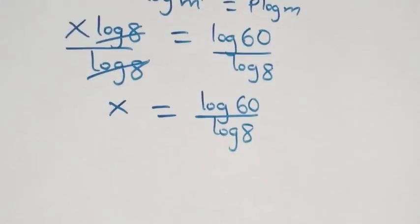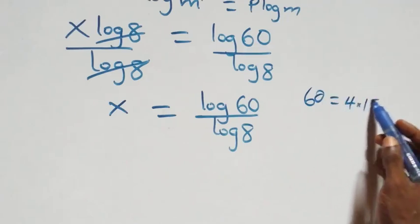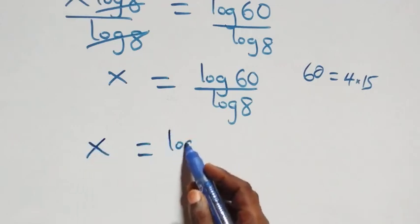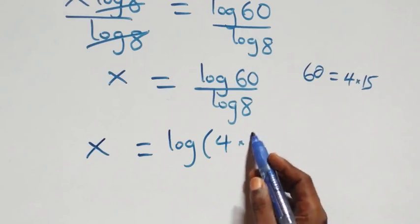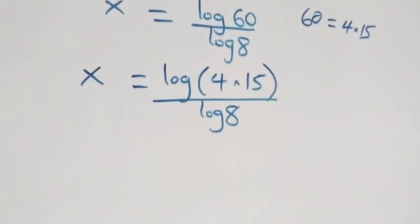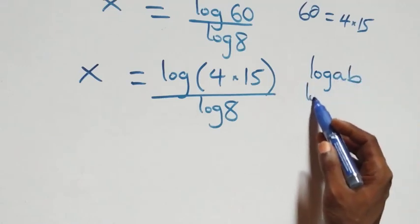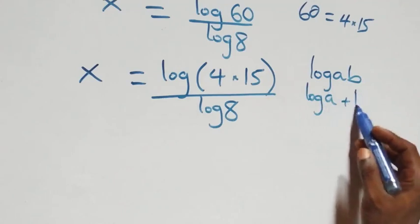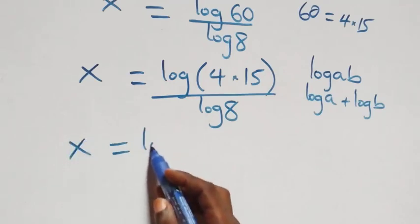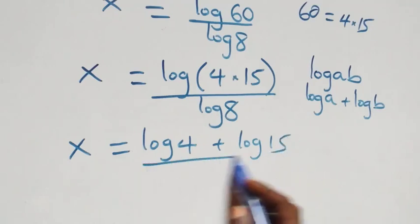We can express sixty as four times fifteen. So x equals to log of four times fifteen over log eight. From the law of logarithm, log of a times b can be written as log a plus log b. So this becomes x equals to log four plus log fifteen over log eight.